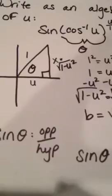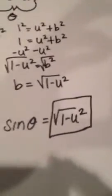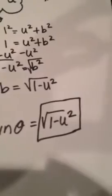Do that over the hypotenuse, which is 1. So sine of theta is just square root of 1 minus u squared, because it's over 1.